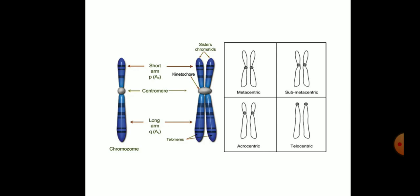Types of chromosomes: Metacentric, submetacentric, acrocentric and telocentric. This is based on the position of centromere.